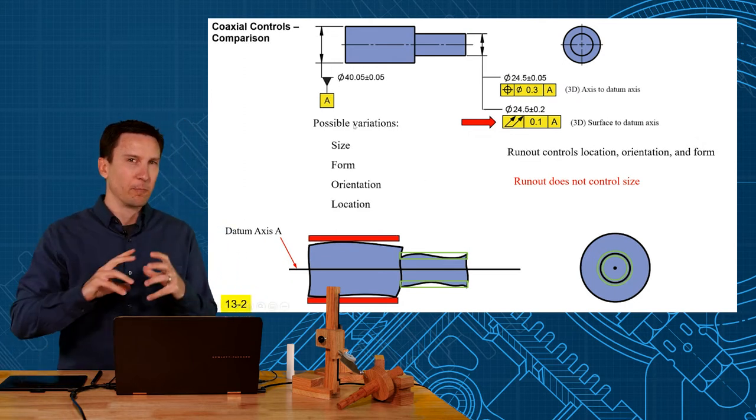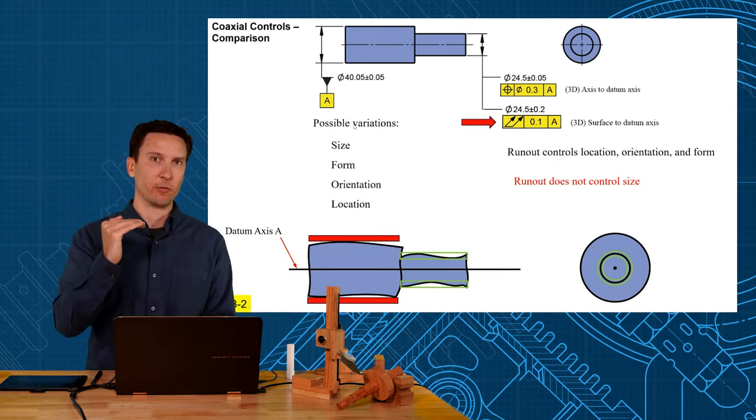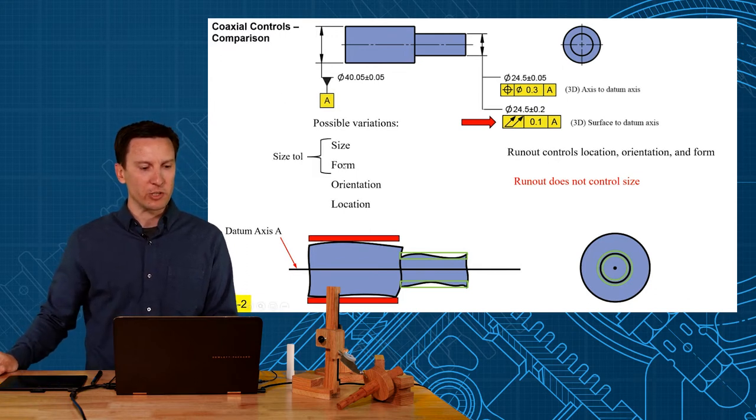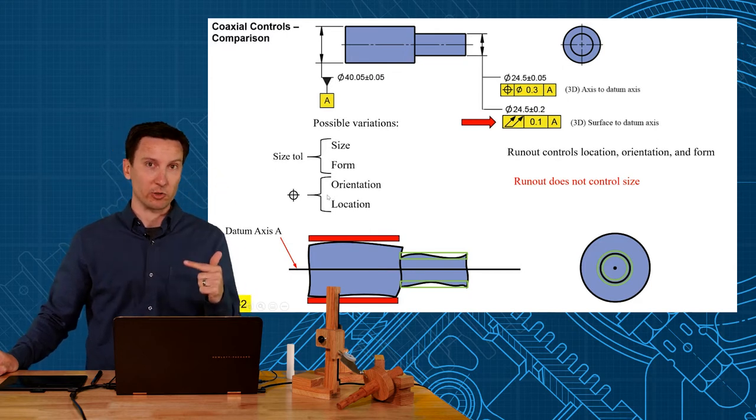So if we take that big picture idea again, remember the four possible variations we can have: size, form, orientation, and location. So remember with position tolerances, we put a size tolerance and a position to separately control size and form from the orientation and location.